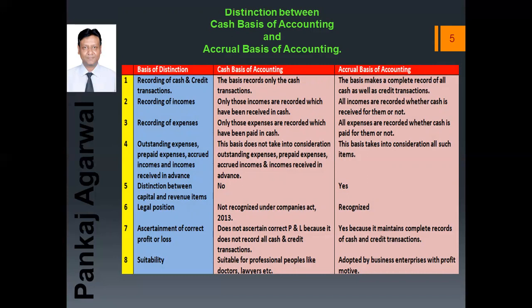Next, recording of incomes: under cash basis, only those incomes which have been received in cash are recorded. Under accrual basis, all incomes are recorded whether cash has been received or not. Recording of expenses: in cash basis, only those expenses which have been paid in cash are recorded. In accrual basis, all expenses — whether outstanding or prepaid — are adjusted in the books of account and recorded whether cash is paid or not. Outstanding expenses, prepaid expenses, accrued incomes and incomes received in advance are not considered under cash basis, but they are considered under accrual basis.